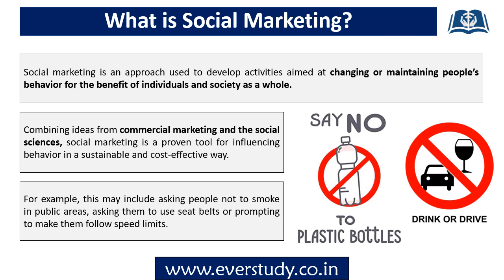What is Social Marketing? Social Marketing की approach को कुछ ऐसी activities को develop करने के लिए use किया जाता है, जिनका main aim है लोगों के behavior में changes लाना, जिससे उनका खुद का और society का benefit हो. Commercial Marketing और Social Sciences की ideas को combine करके हम individuals के behavior में sustainable और cost-effective way में changes लाने की कोशिश करते हैं. Although Social Marketing का aim Social Good होता है और Commercial Marketing का financial aim होता है, पर इसका मतलब यह नहीं है कि Commercial Marketers Social Good की achievement में contribute नहीं कर सकते.